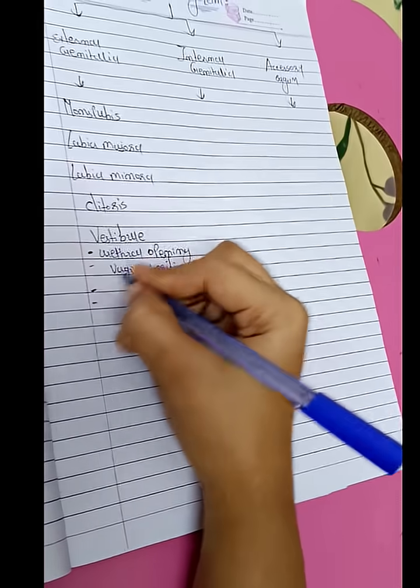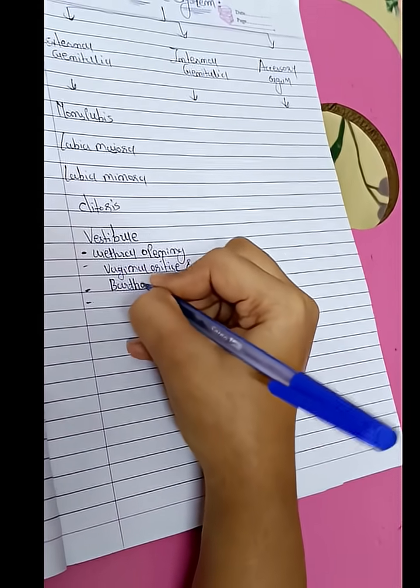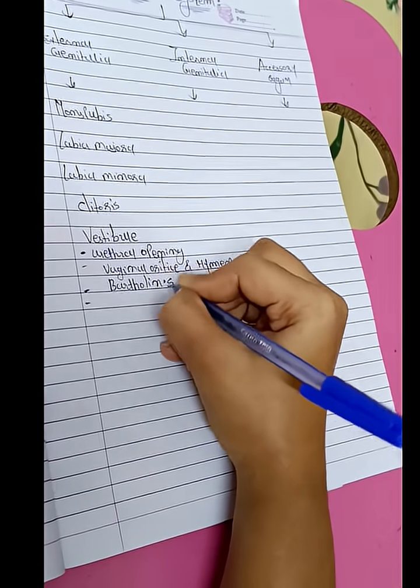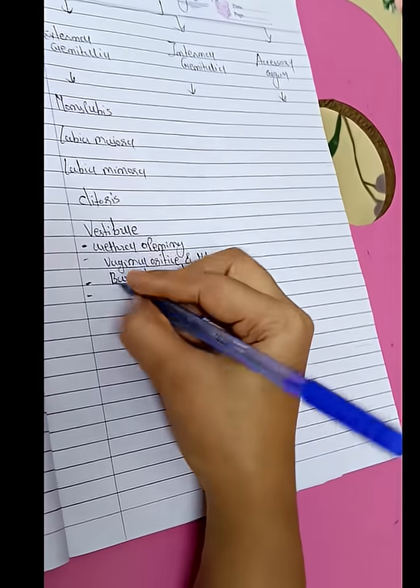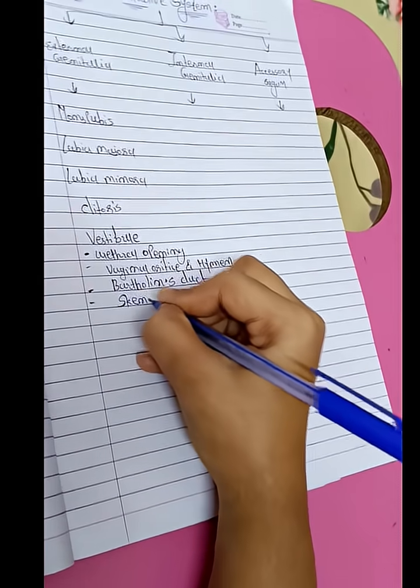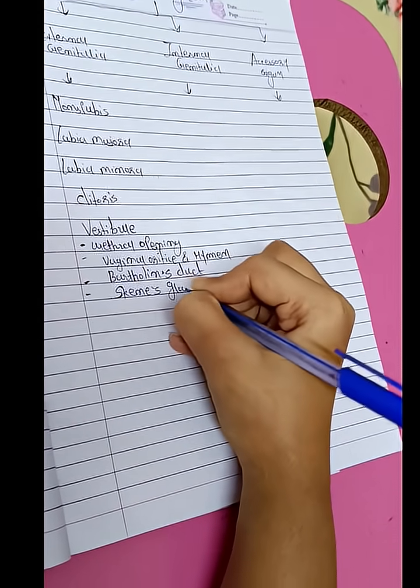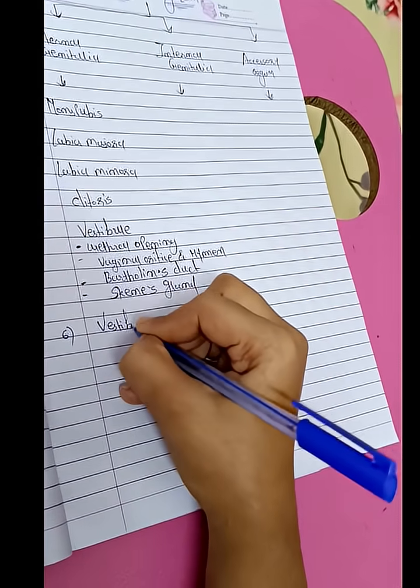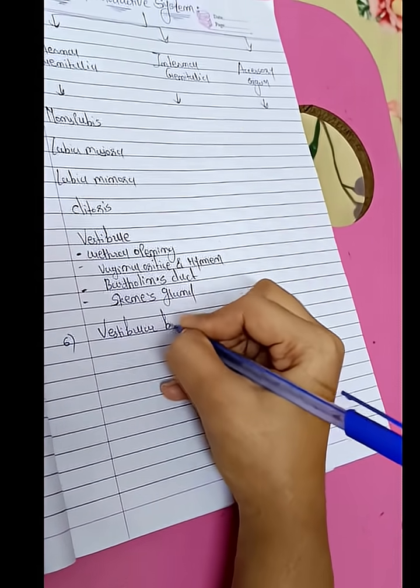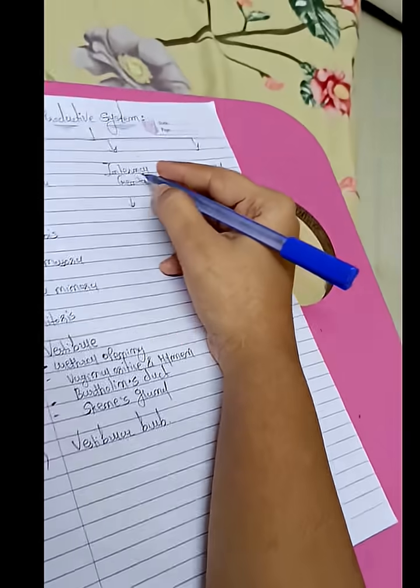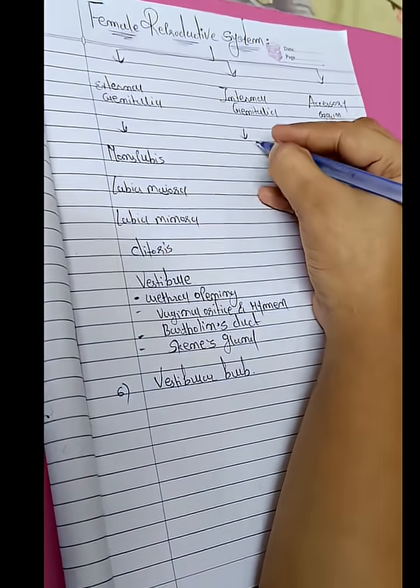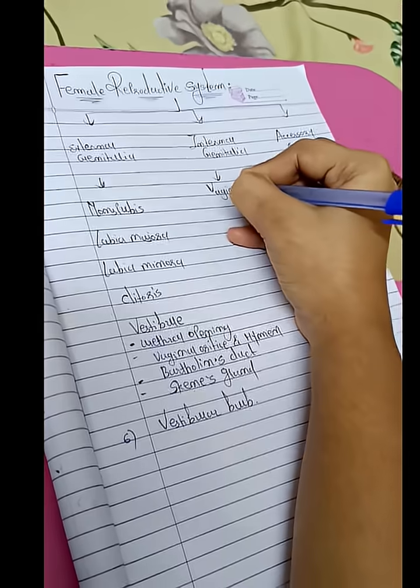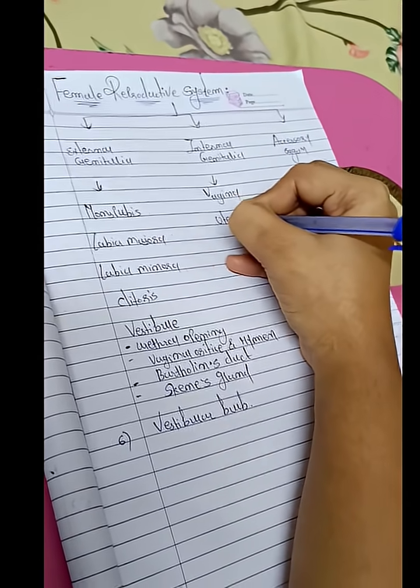Third is bartholin's gland. Fourth is skene's gland. Sixth is vestibular bulb. Into the internal genitalia: first is vagina, second is uterus.